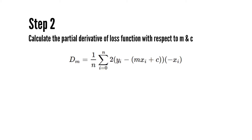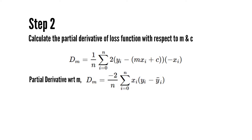Next, let's calculate the partial derivative of the loss function with respect to m. Finding the partial derivative with respect to m means differentiating the function for only the terms containing m and treating everything else as constant. Applying the chain rule to the squared term gives us 2 times (y − (mx + c)), and the only term containing m is −mx, so its derivative is −x. Substituting y-bar for mx + c, we get: dm = −(2/n) × Σ xᵢ × (yᵢ − ȳᵢ).